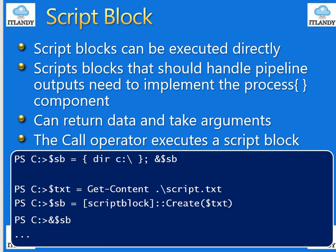The script block can be executed directly. A script block should handle pipeline output — this needs to be implemented in the process between the brackets. It can return data and take arguments. The call operator executes the script block.